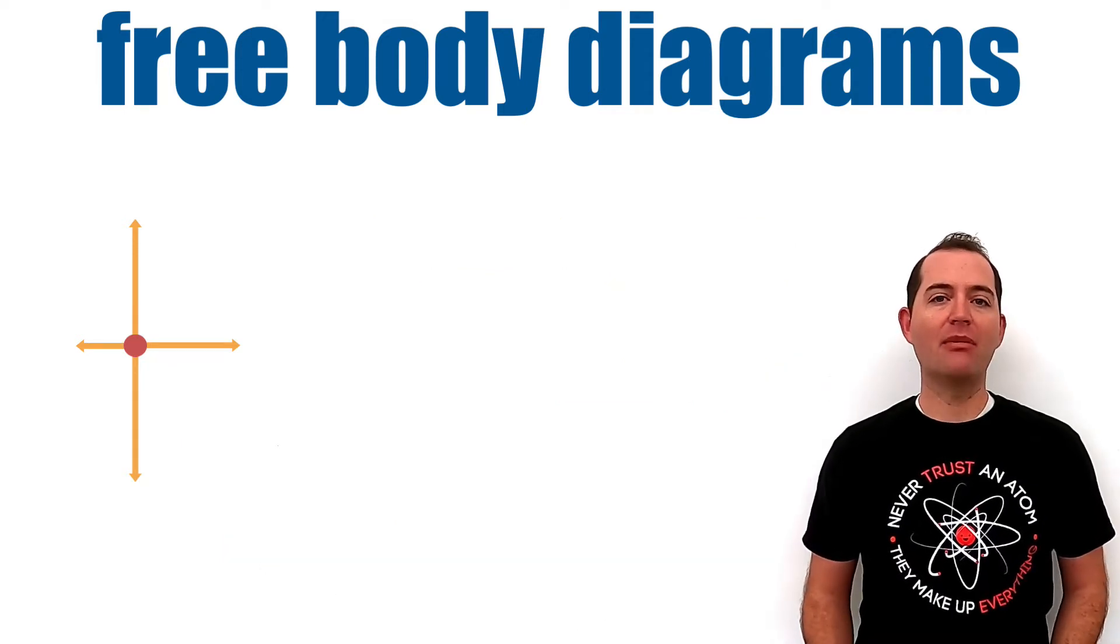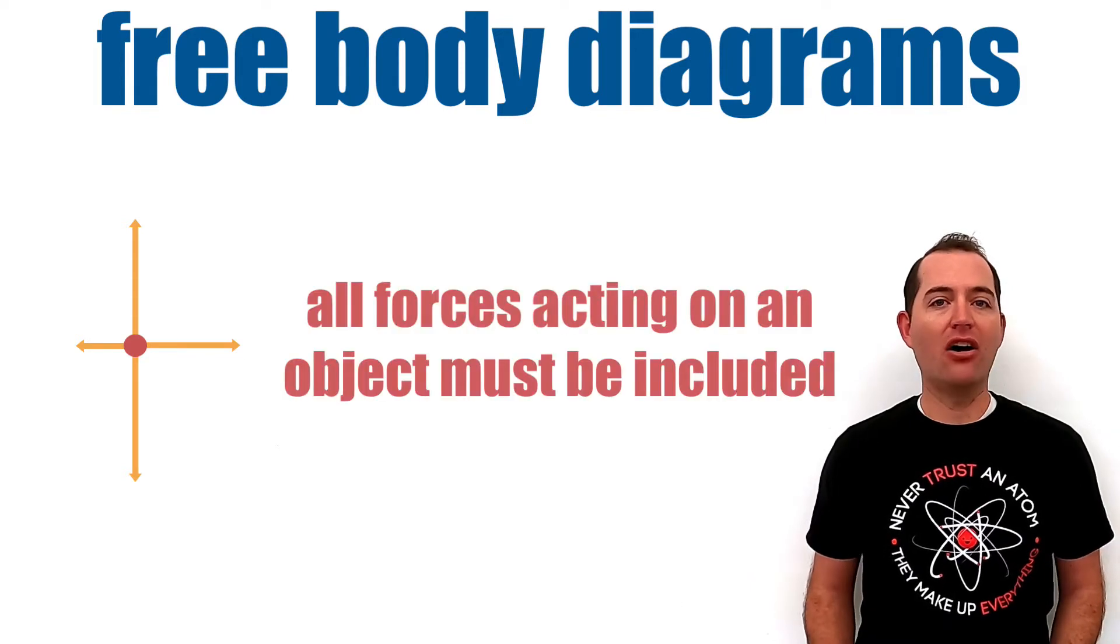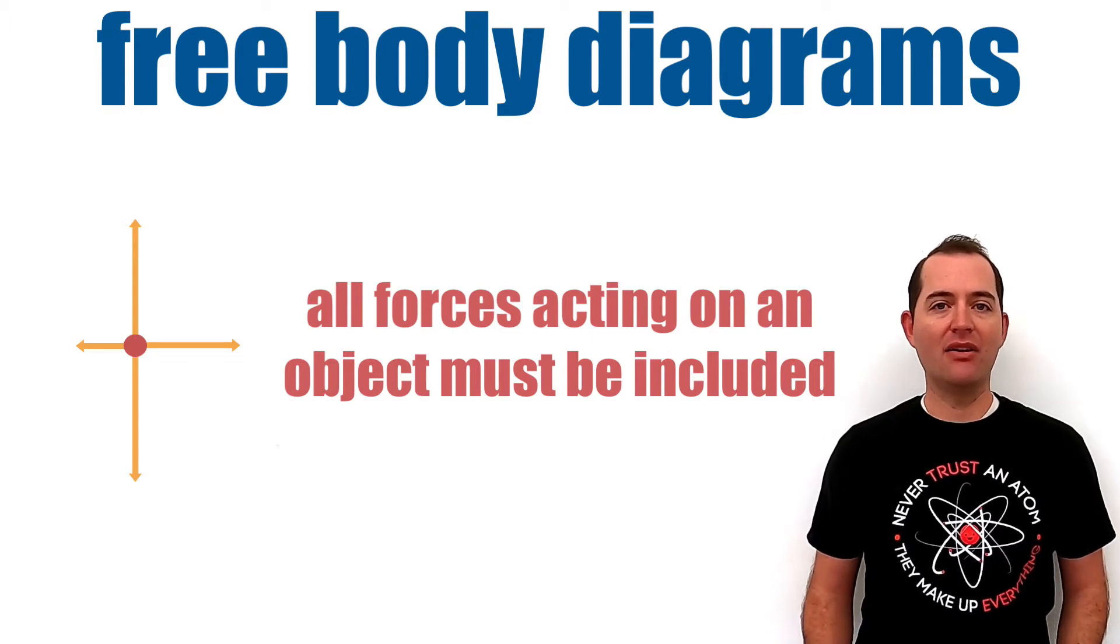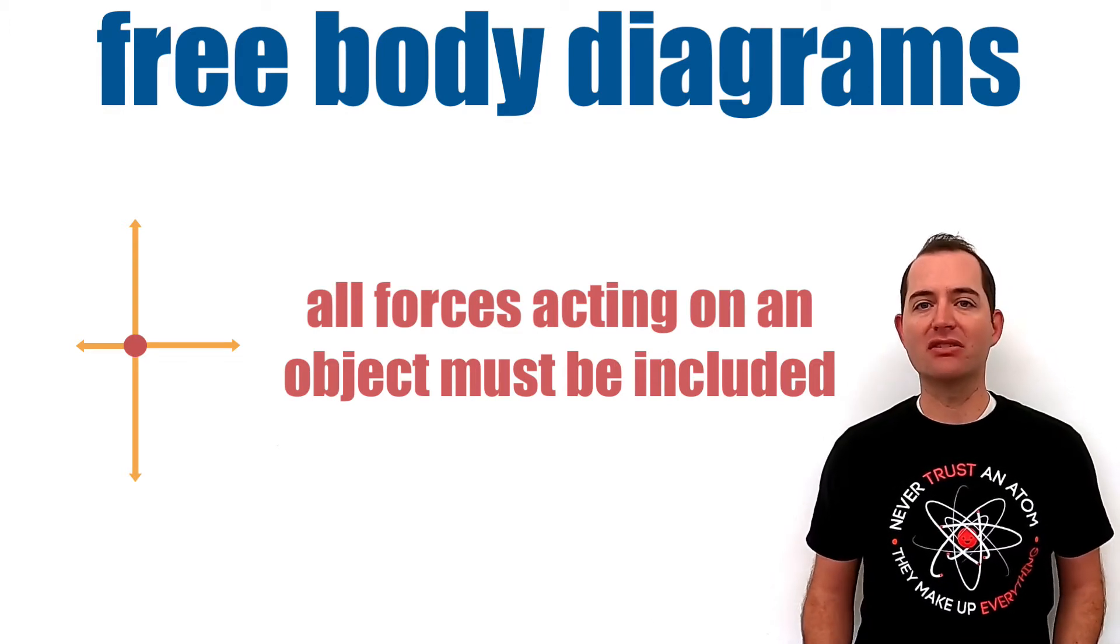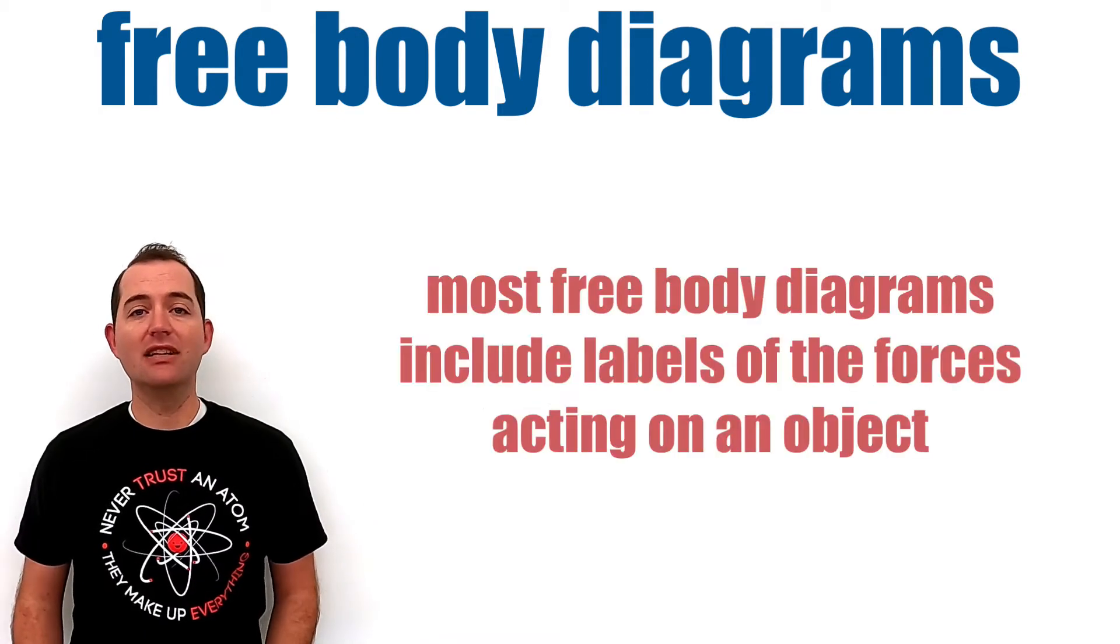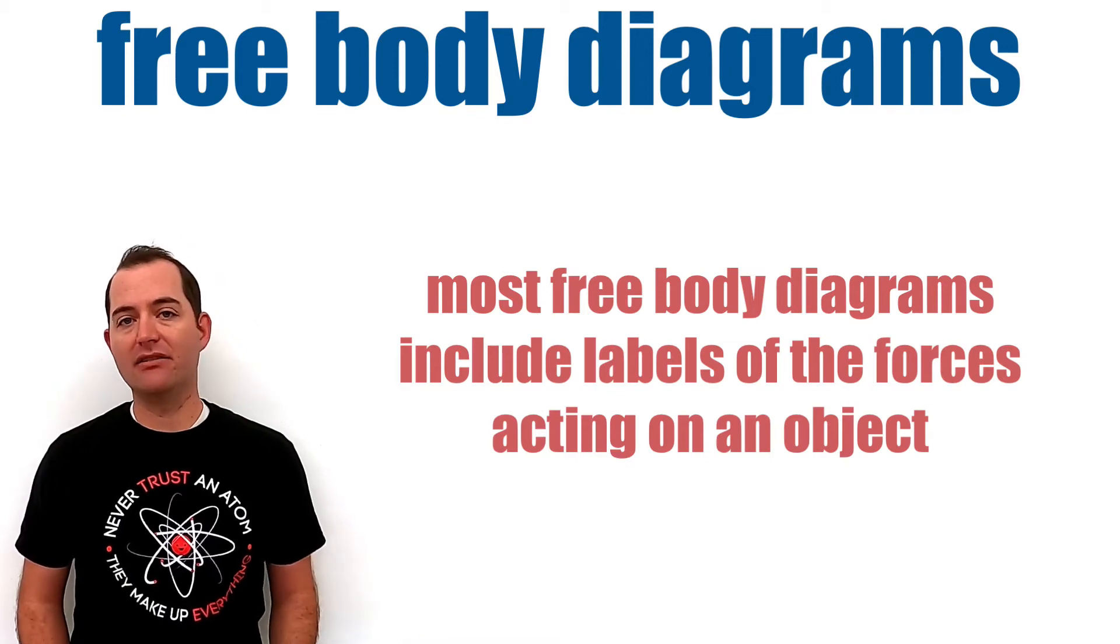There is no rule for how many forces should be shown acting on an object, only that all forces acting on an object should be included. Depending on the scenario, there may be different numbers of forces acting on an object. It is also common practice to label the type of force that is acting on the object in the free body diagram.